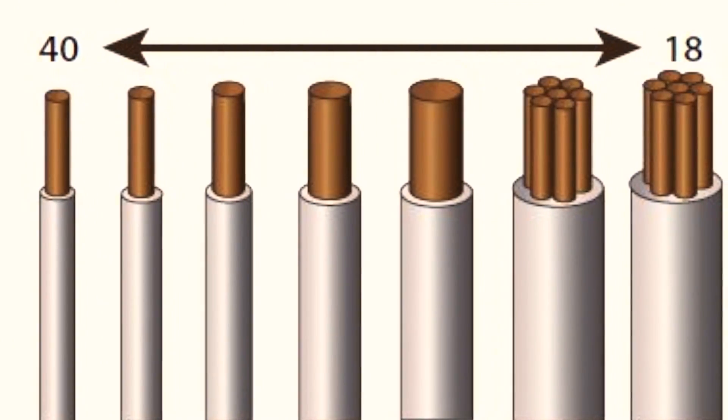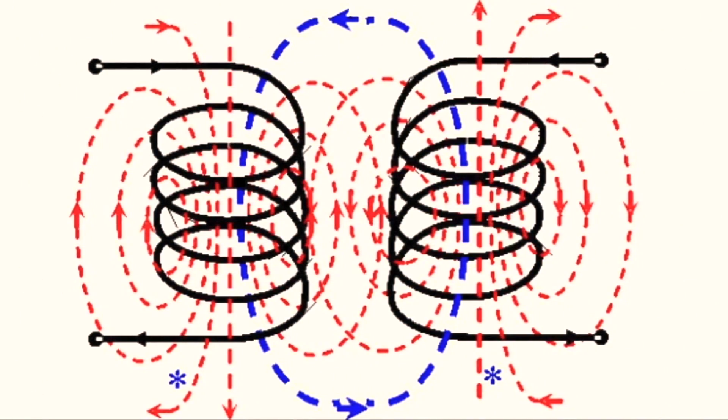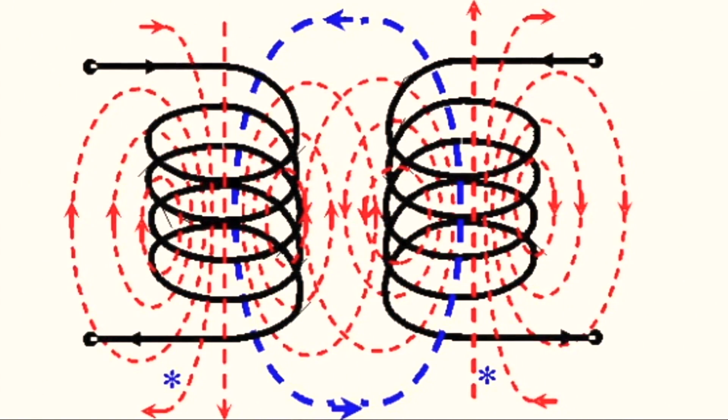There are a lot of factors that play into how much current is induced in the secondary, like wire thickness, the amount of turns the coils have, and the distance between the primary and secondary coil. But I want to talk about arguably the most important part of a transformer: the core. In almost all transformers, you'll notice some kind of metal core that someone put there on purpose.